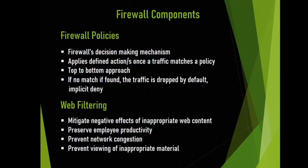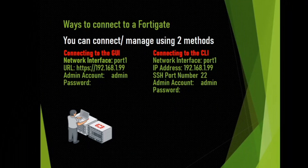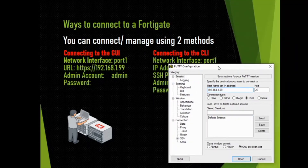Firewall policies work from a top-to-bottom approach, and if no match is found, the traffic is dropped by default by the implicit deny policy at the bottom. Web filtering, on the other hand, is the tool that gives you more control over the resources or contents being browsed within your network — basically made for those who browse and download things during work hours. FortiGates can be managed in two ways: using your web browser to access the GUI, or using programs like PuTTY, TeraTerm, or SecureCRT to access the CLI.